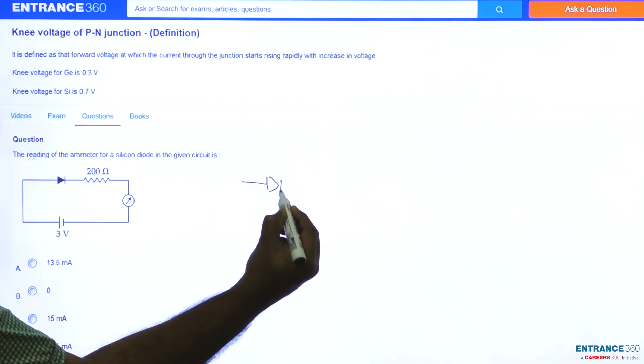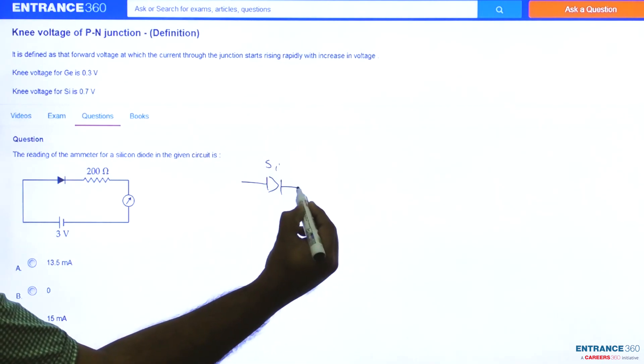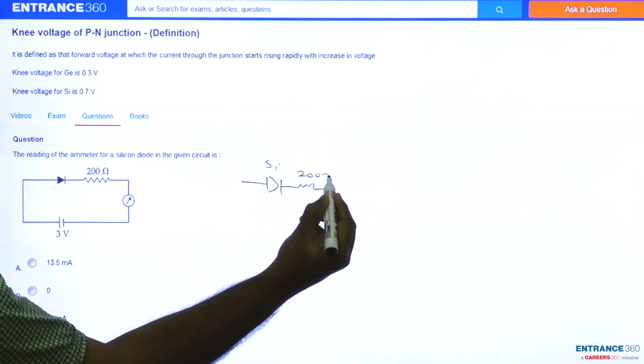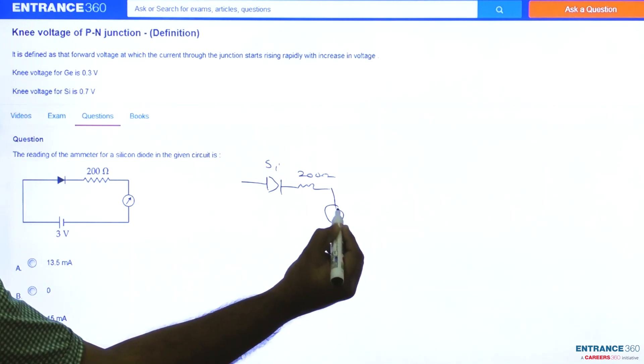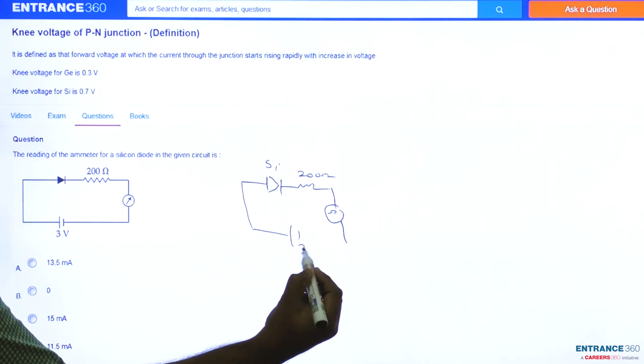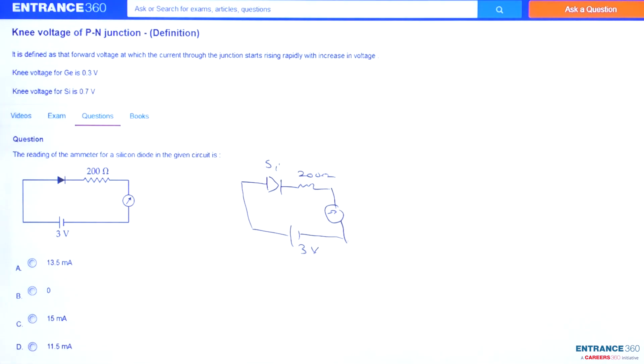In the circuit, it is mentioned that a diode of silicon is in series with 200 ohm resistor. We have an ammeter, which is always connected in series with the circuit, and a 3-volt battery.